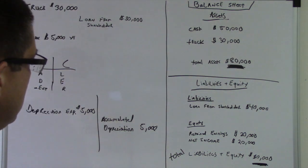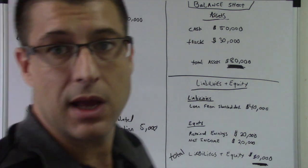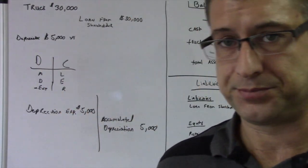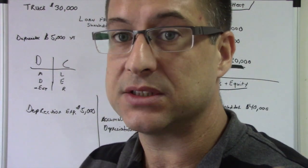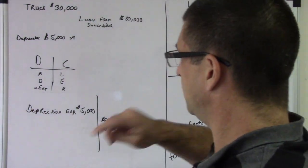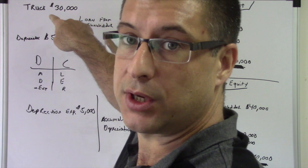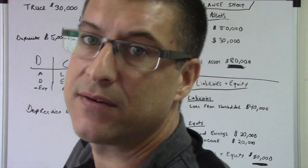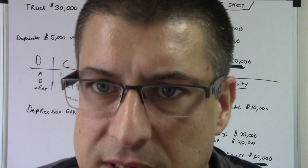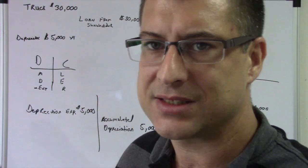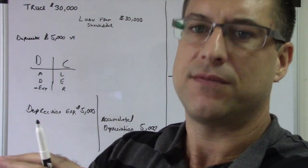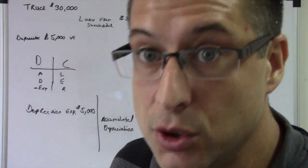So, debit credit matches. Now, how would that look? How's that going to look on the balance sheet? And, because now, your truck, it depreciated $5,000. It was $30,000. So, now it's only worth $25,000. But, please, don't go into the truck account and lessen that by $5,000. Don't do that.